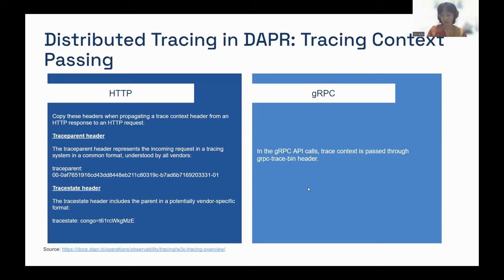If you want to pass the same spans across several different services, you will need to pass the context header yourself. You will need the traceparent header, as it is needed for all different services, and optionally the tracestate header. The header names follow the W3C schema. For gRPC, it will have a different header — the header name is grpc-trace-bin.